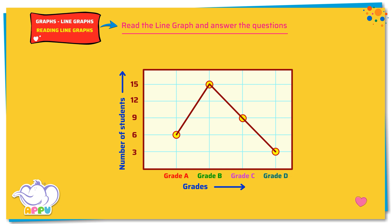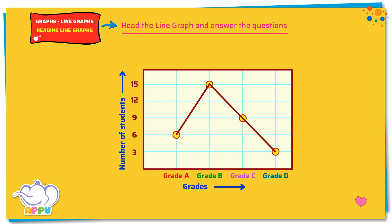The line graph is about the number of students in a class and their grades. In this line graph, we have the grades at the bottom, and for every grade, we have a dot representing the number of students.